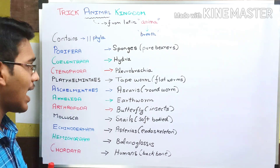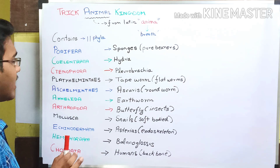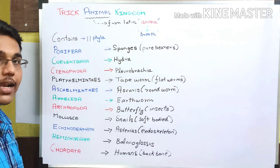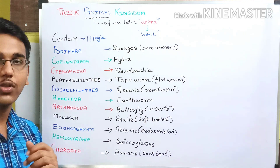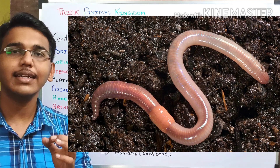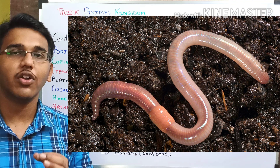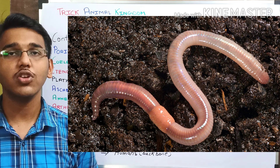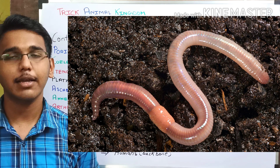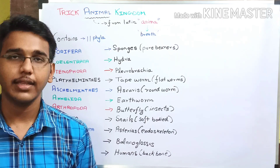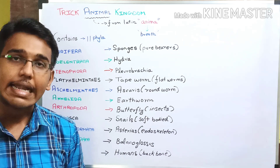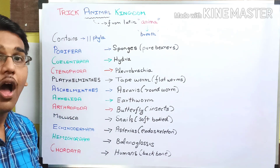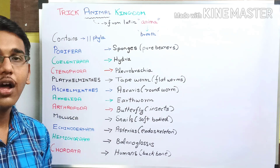Next we have phylum Annelida. The example of phylum Annelida is earthworm. An important characteristic feature of phylum Annelida is the presence of metameric segmentation in their body.